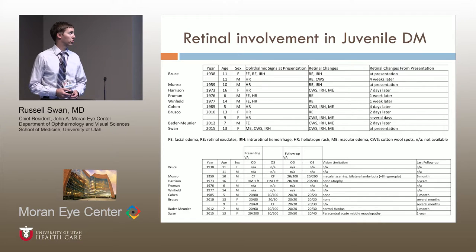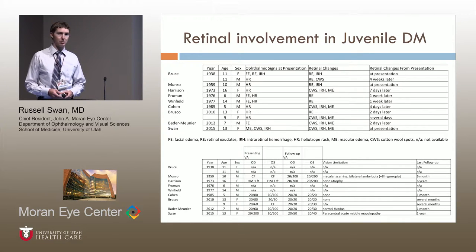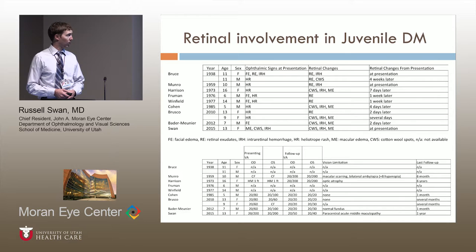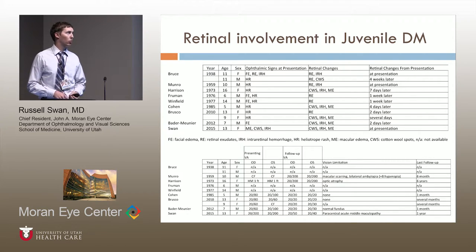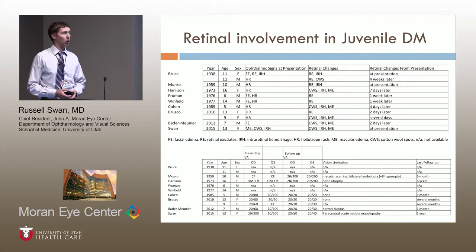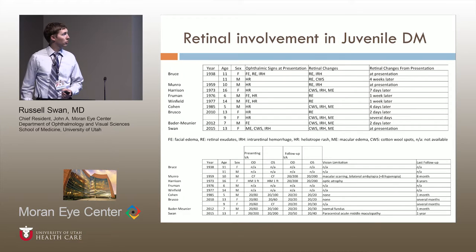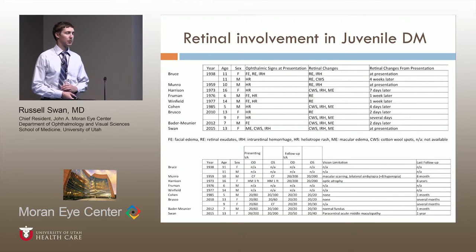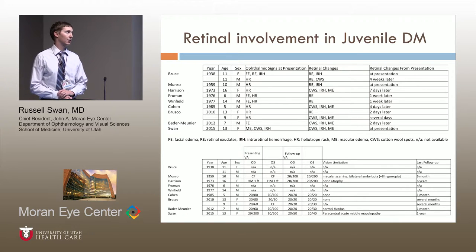This is a list of all cases in the literature. The first was described by Bruce in 1938 — two cases in young patients with what has since been considered juvenile dermatomyositis. There is a fairly even distribution of females and males across the literature. Many patients had notable retinal changes including cotton wool spots, intraretinal hemorrhages, macular edema, and retinal exudates, but a lot of these changes were not noted at presentation. Cases with retinal changes at presentation included Bruce's patient, our patient, and Harrison's patient from 1973.